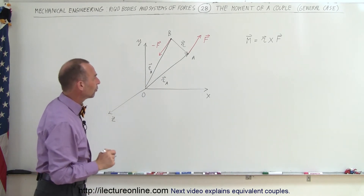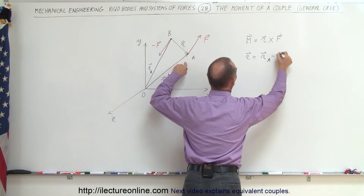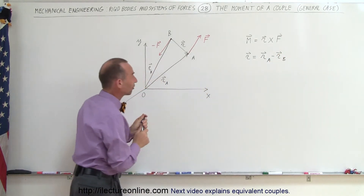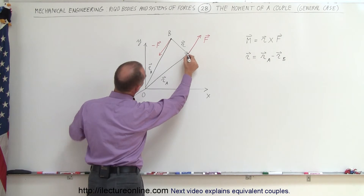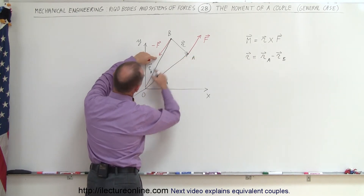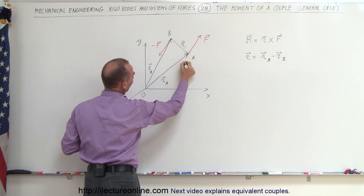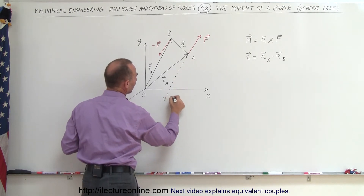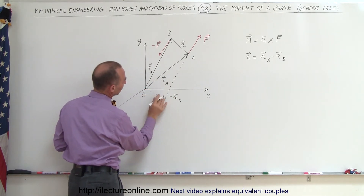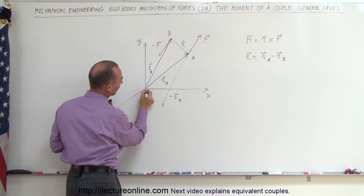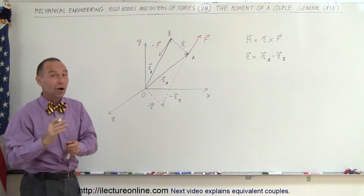What we're going to do next is write R as being equal to R sub A minus R sub B. That would be correct if you add the negative of R sub B to R sub A. The negative R sub B would be this vector right here. So there's the vector R sub A, here's the vector R sub B, and the negative of vector R sub B would look like this — that would be minus R sub B. If you add R sub A plus the negative R sub B, you get this vector right here, and you can see that this would therefore be the R vector, which is the same as this R vector right there. So R is indeed R sub A minus R sub B.